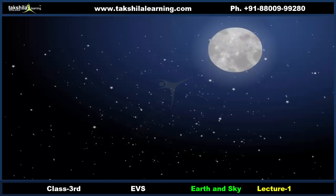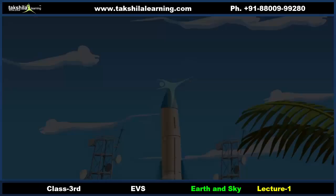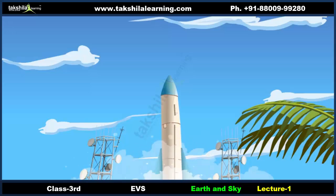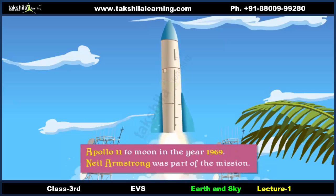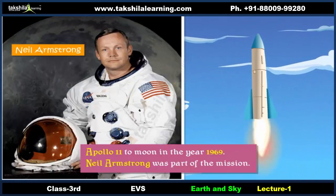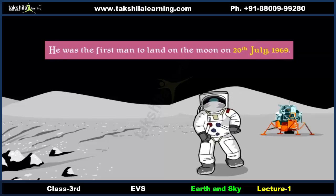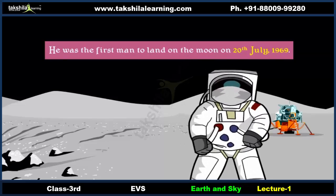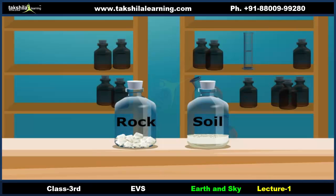Even though life is impossible on the Moon, it continues to fascinate scientists. They wanted to learn more about it, so they sent a mission called Apollo 11 to the Moon in 1969. Neil Armstrong was part of the mission and was the first man to land on the Moon on 20th July 1969. He performed various experiments and brought back samples of soil and rock.